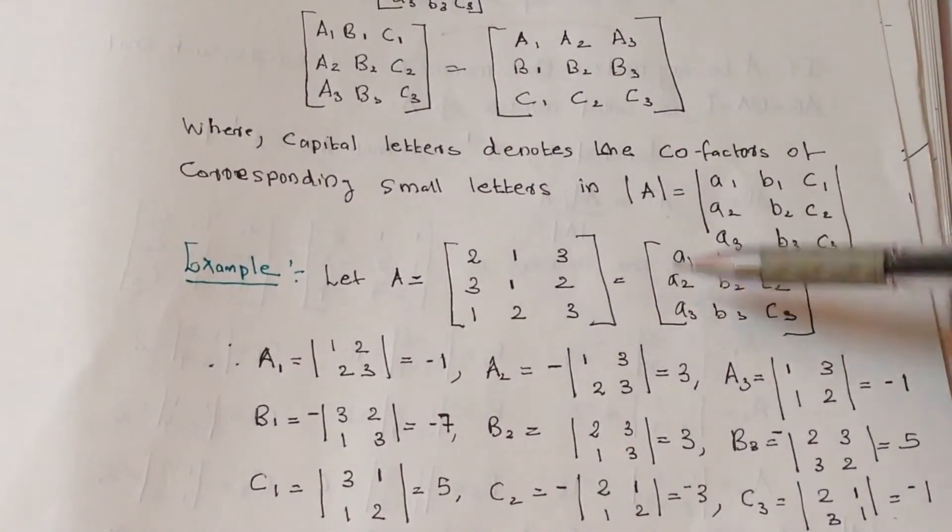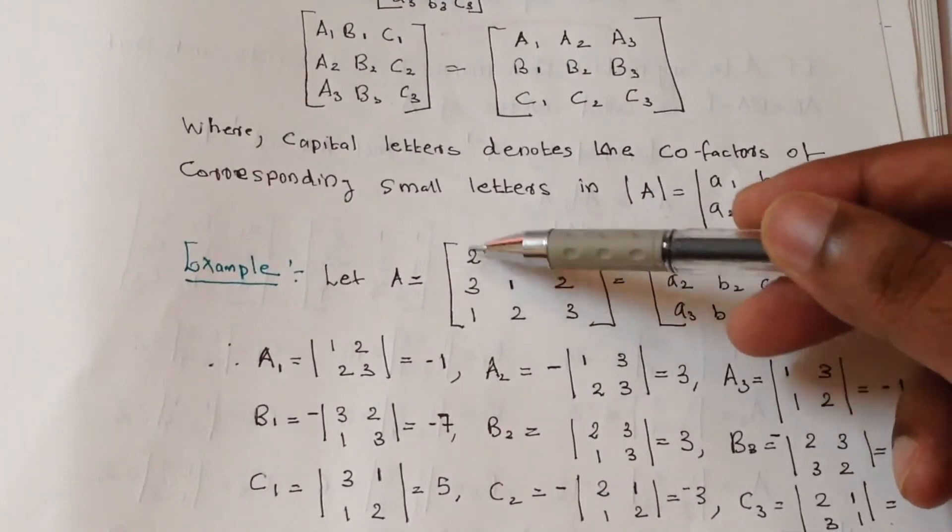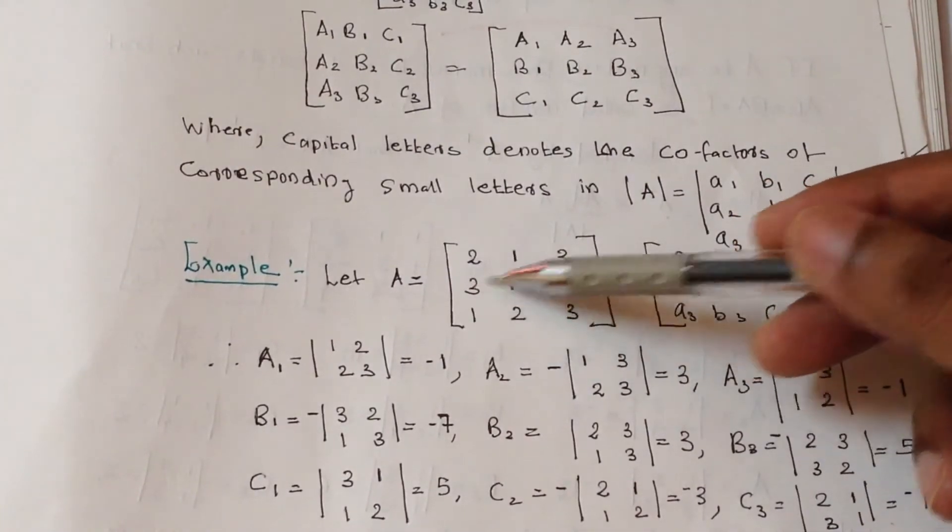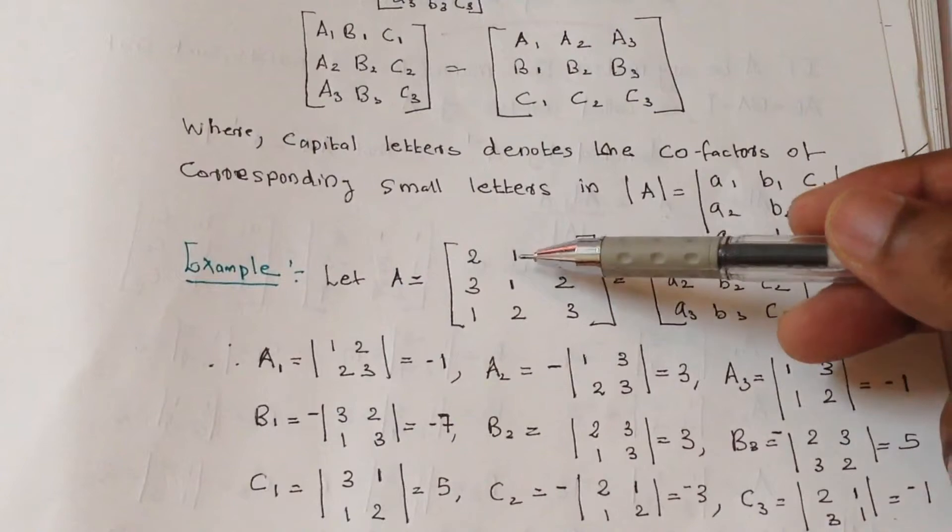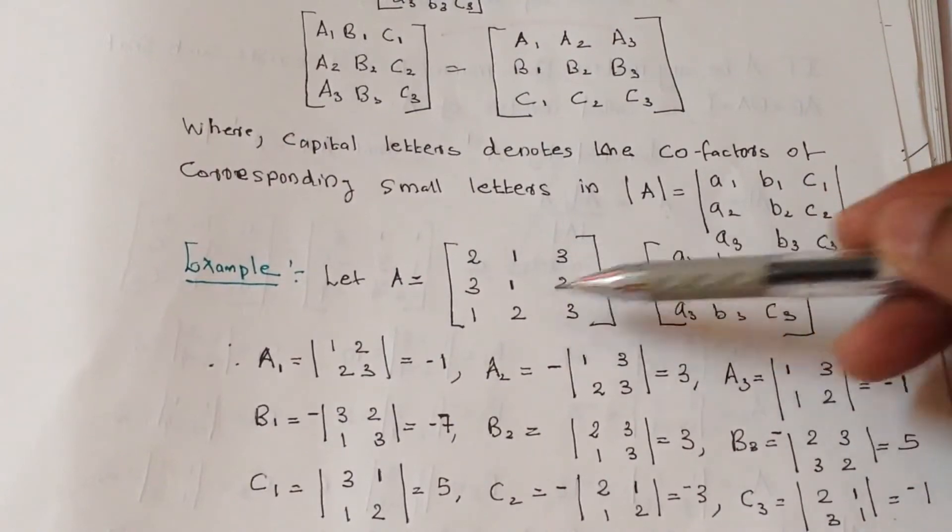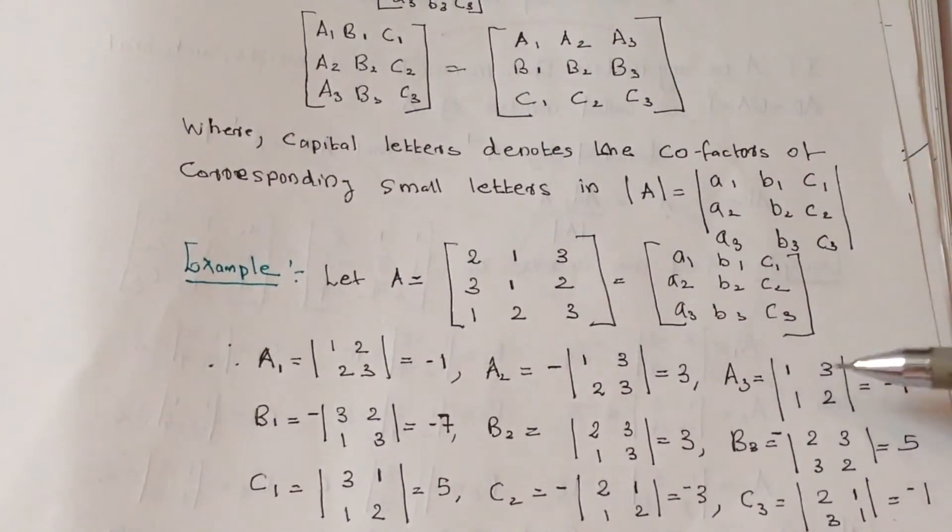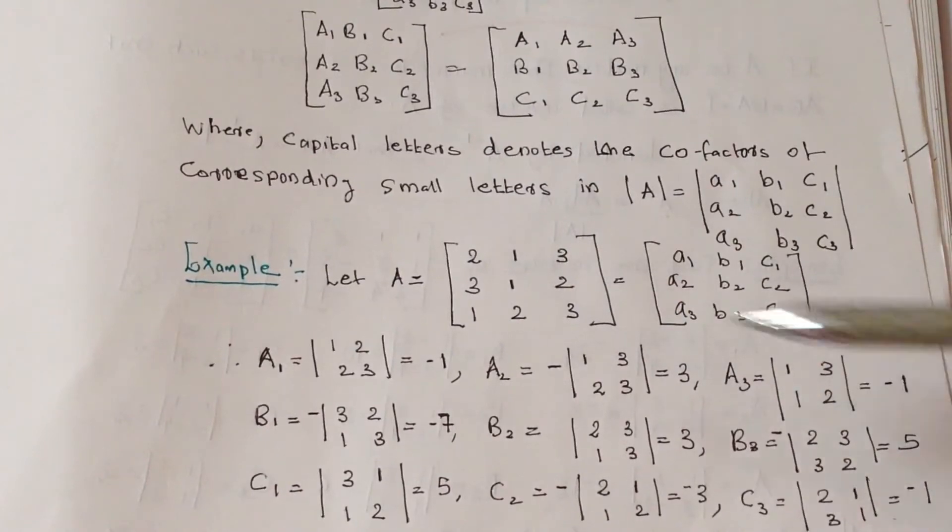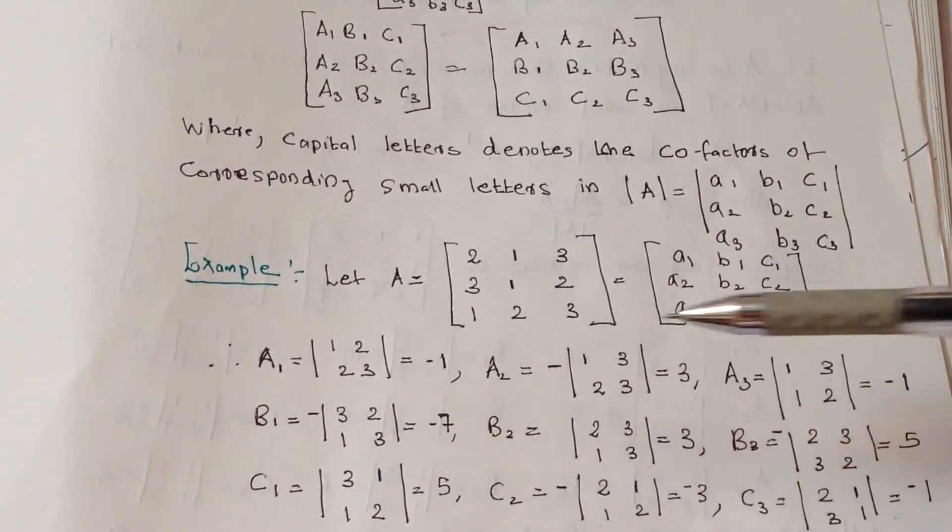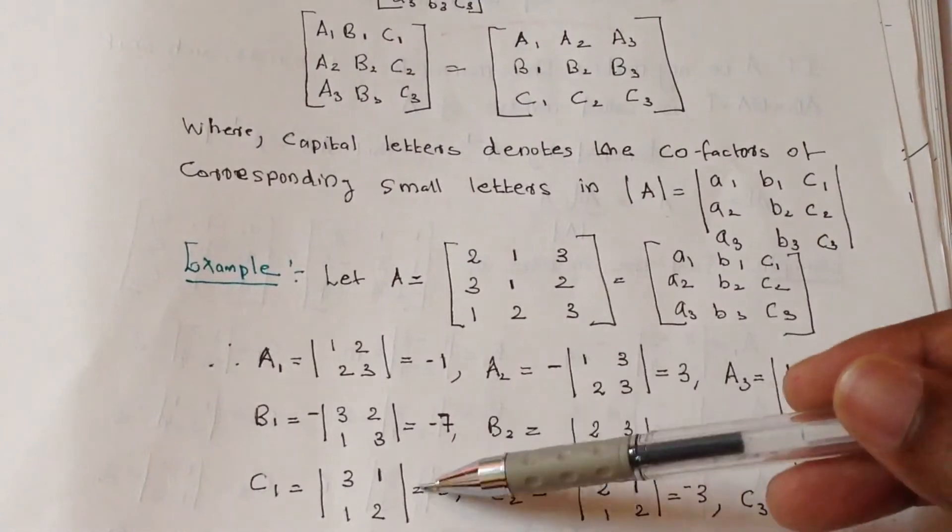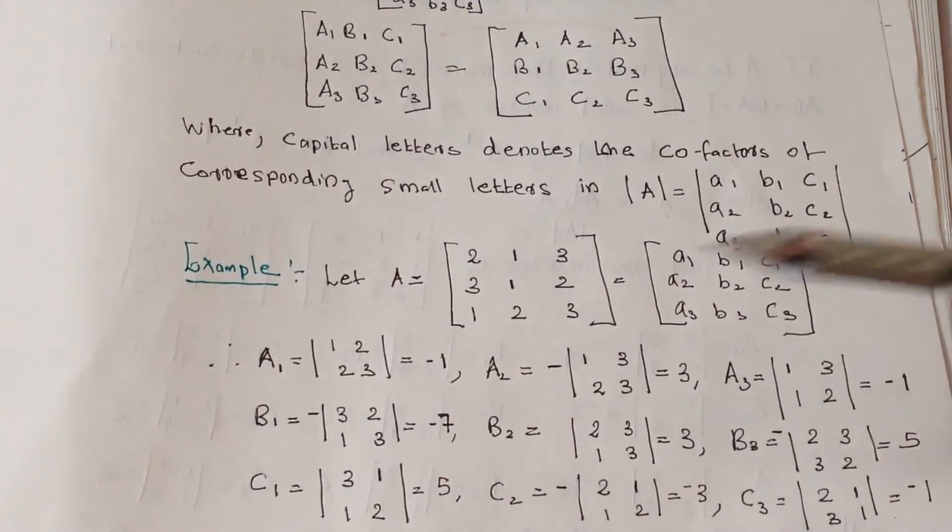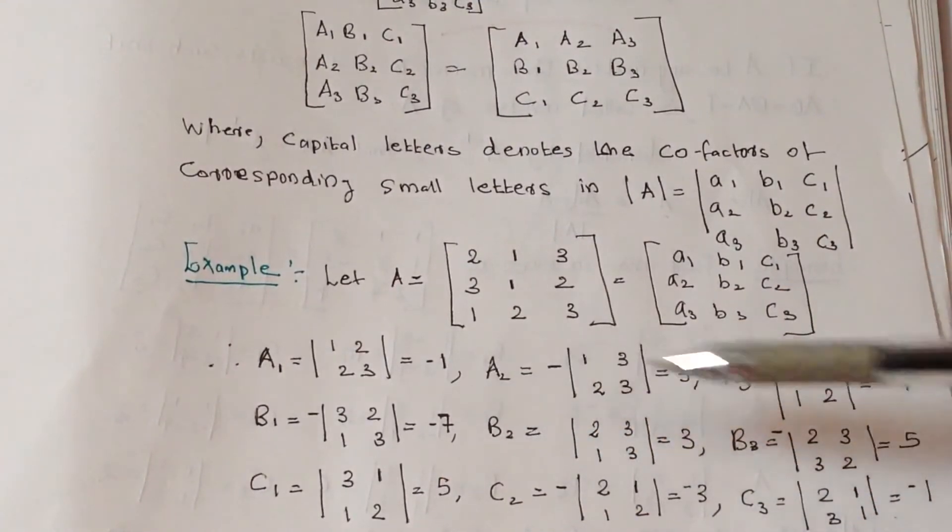A2 is 3, so we ignore this column and this row: 1 3, 2 3. Similarly A3, we'll take 1 3, 1 2. B1, B2, B3, C1, C2, C3. By finding the cofactors, we'll be getting these values.